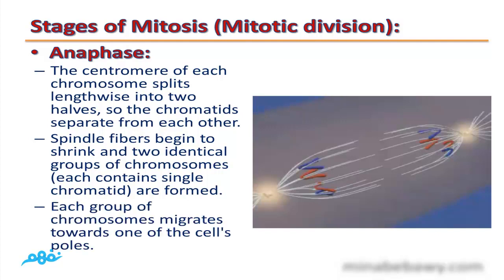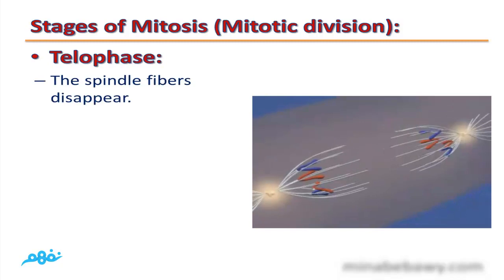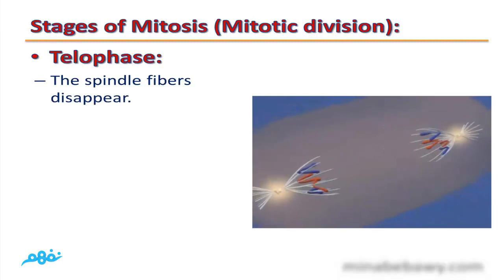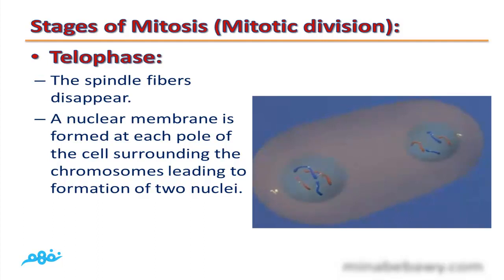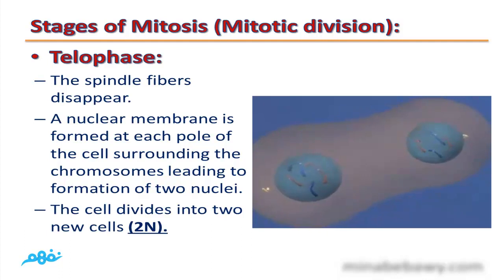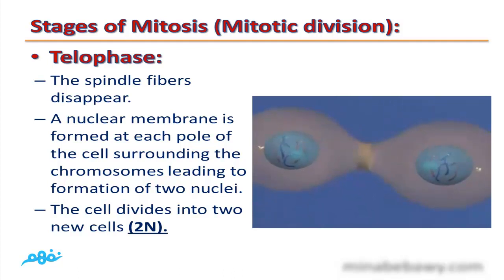Each group of chromosomes migrates toward one of the cell's poles. The final phase is telophase: the spindle fibers disappear, a nuclear membrane is formed at each pole of the cell surrounding the chromosomes, leading to the formation of two nuclei. The cell then divides into two new cells, each diploid, containing 2N — a complete copy of chromosomes.